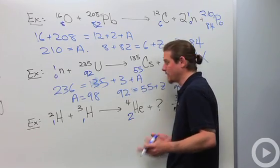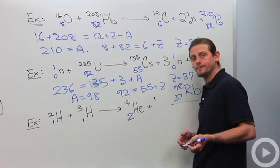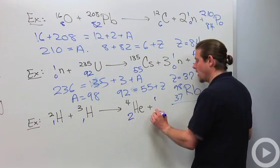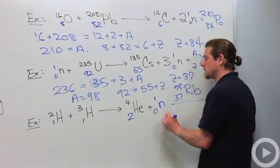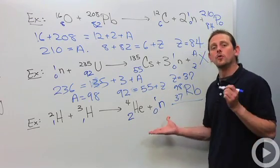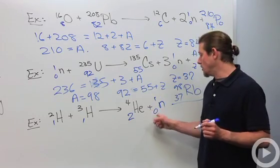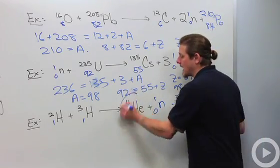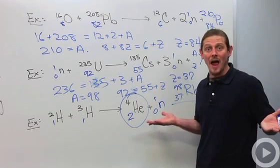If we look along the top we got 2 and 3, that's 5. We only got 4 there so this guy has to have a 1. 1 and 1 is 2, we already got that, so that means this one is a 0. Who's 1-0? That's my neutron. So this is a fusion reaction that spits off a neutron and this nice stable alpha particle, helium-4. That's nuclear reactions.